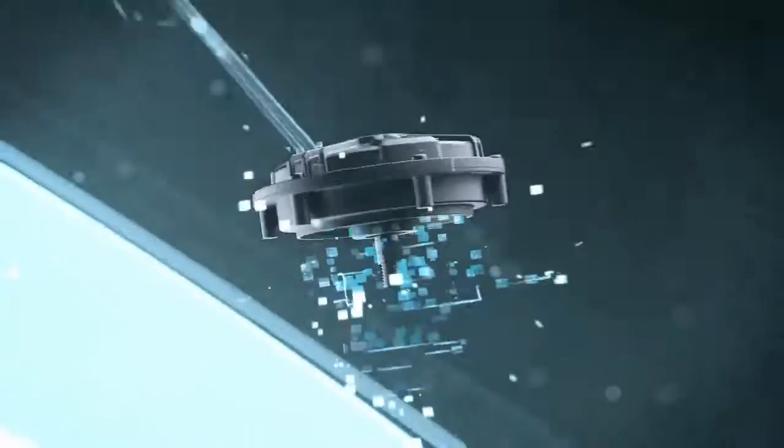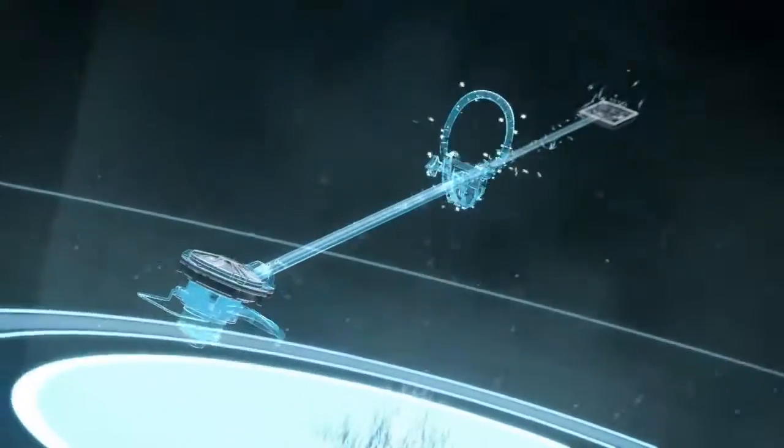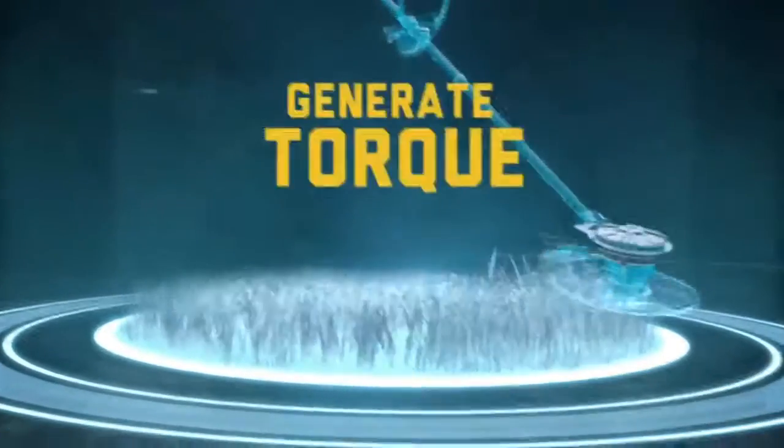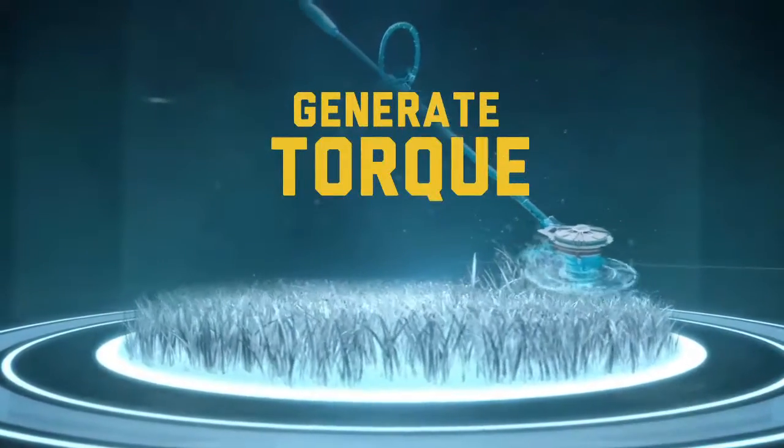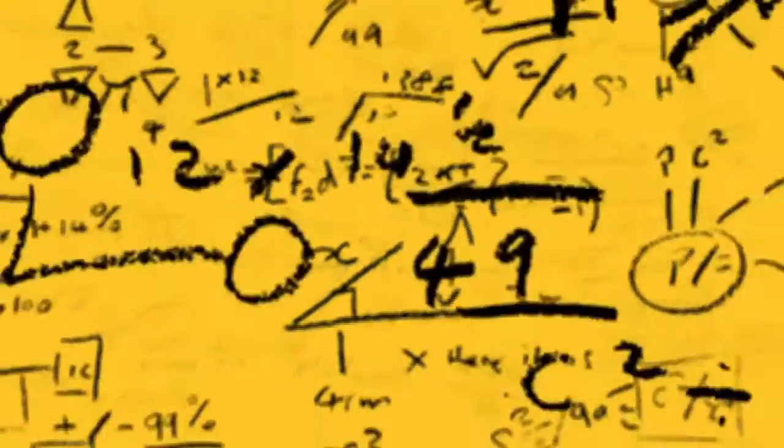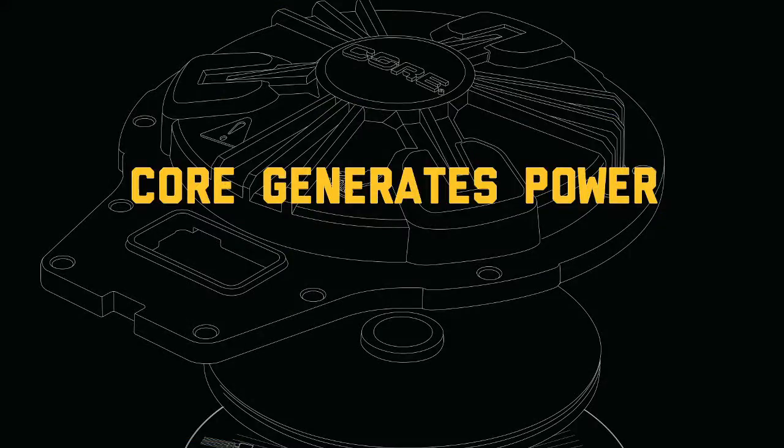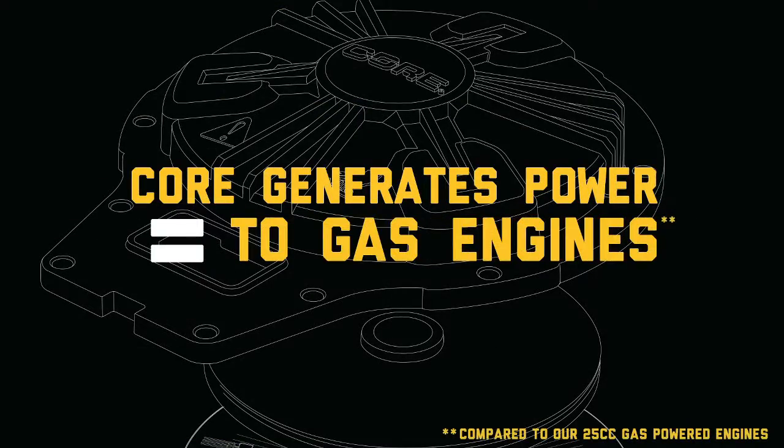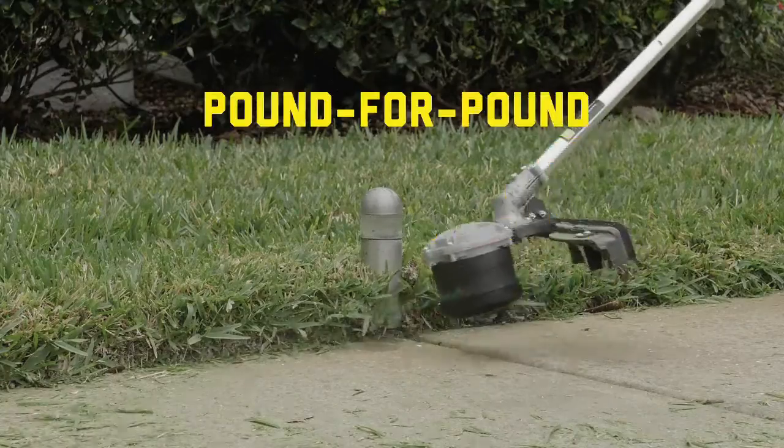If you're thinking there's no way a cordless tool has the strength to meet your lawn's needs, think again. Power comes from a motor's ability to generate torque, not from battery voltage. In fact, the science is clear. Core generates power equal to gas engines and maximizes pound for pound power efficiency.